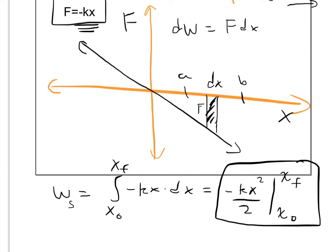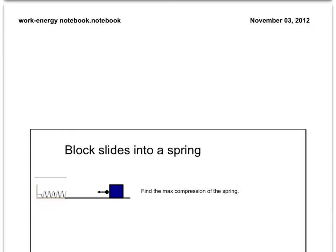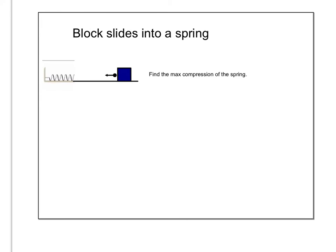Let's see how this ties into our work. Imagine you've got some block sliding into a spring with some mass m and some velocity v. We want to know the max compression of the spring. The max compression is going to occur when the velocity equals zero.